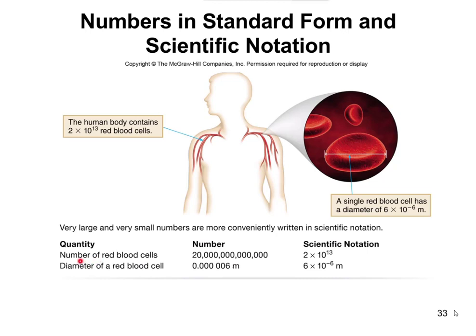If we were to look at the diameter of a red blood cell, it's going to be a really small size. Red blood cells are microscopic, and they're going to have a diameter of about 6 times 10 to the negative 6 meters. Instead of writing 0.0000006, if I'm reading that number, I have to figure out exactly how many zeros are before the 6 to get a good gauge on how big it is. Writing 6 times 10 to the negative 6 meters is a faster, easier way to do it.